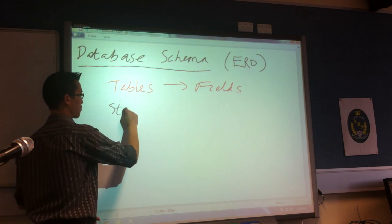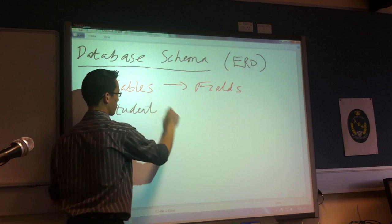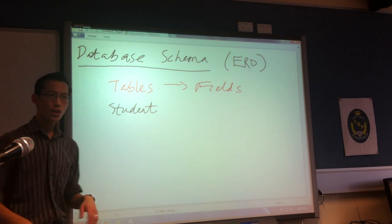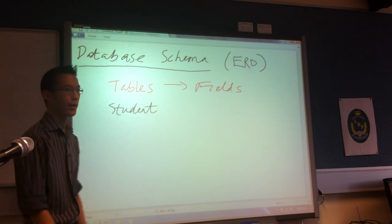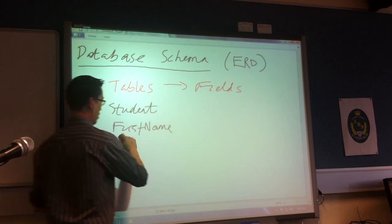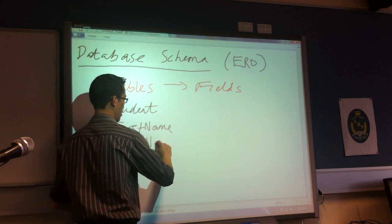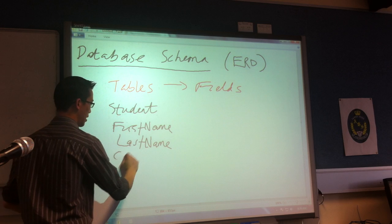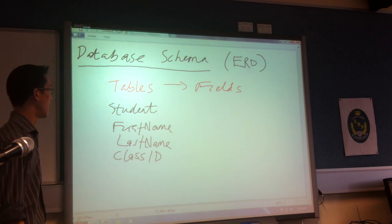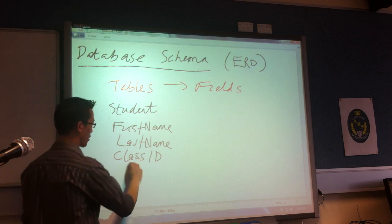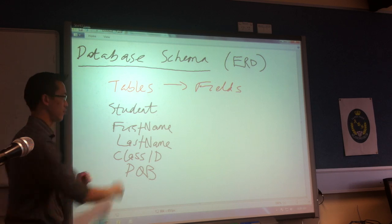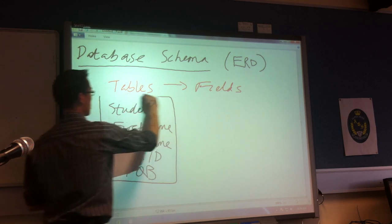So for instance, 'Students'. Underneath the name of your table, you list all of the fields that you know about it. For instance, you might say first name, last name, class ID, and date of birth. That's a pretty typical set of fields that you would know about a student, and then you put it in a box like this.